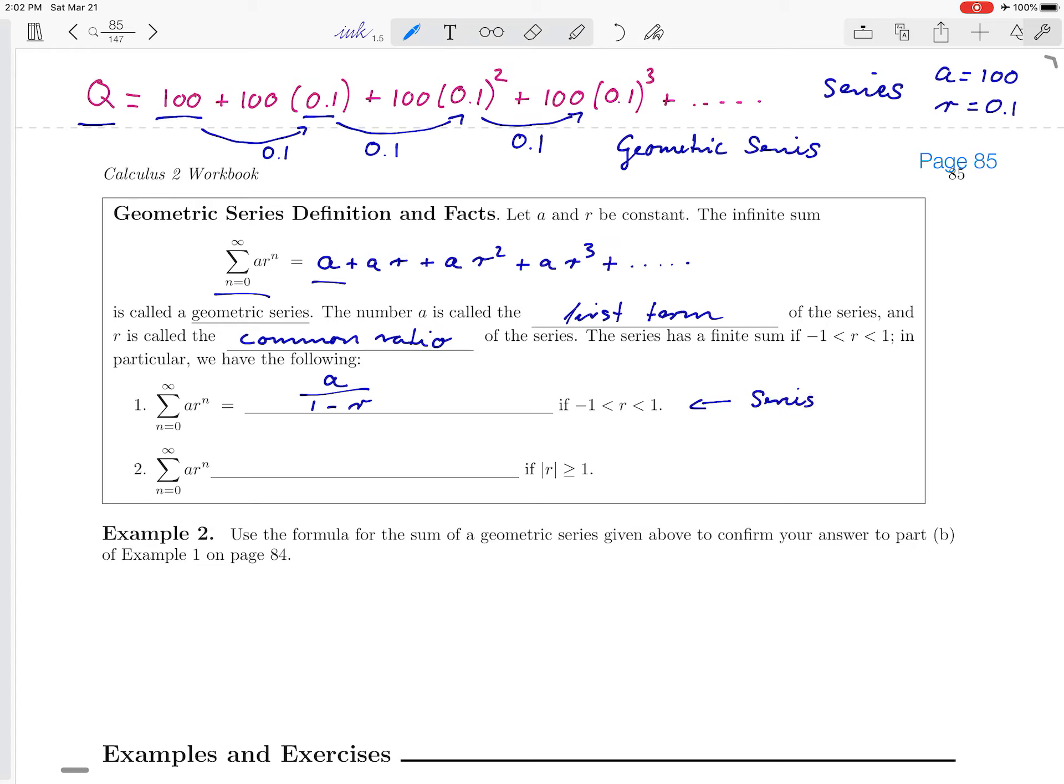If, on the other hand, this common ratio in absolute value is greater than one, so it's something bigger than one or less than minus one, then the series does not converge. It doesn't approach a particular value. And so we say that it diverges.